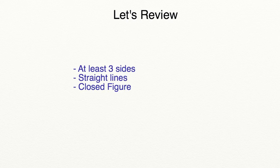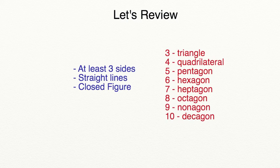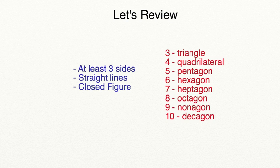Let's take a minute to review what you've learned in today's lesson. Remember, a polygon must have at least three sides made out of straight lines and must be a closed figure. To identify what type of polygon we have, we must look at how many sides are in the shape. For example: three-sided polygons are triangles, four-sided polygons are quadrilaterals, five-sided polygons are pentagons, six-sided polygons are hexagons, seven-sided polygons are heptagons, eight-sided polygons are octagons, nine-sided polygons are nonagons, and ten-sided polygons are decagons.